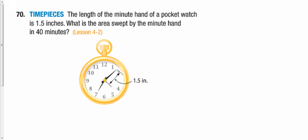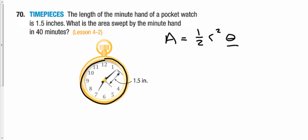Next is a clock problem. The length of the minute hand of a pocket watch is 1.5 inches — what is the area swept by the minute hand in 40 minutes? You need the sector area formula: area equals one half r squared theta. We need to find theta. All the way around the circle is 2π, and 40 minutes on a clock goes to the 8.